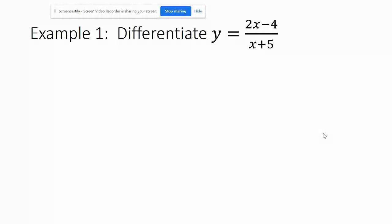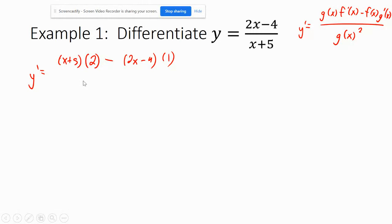All right. Differentiate y equals 2x minus 4 over x plus 5. So we have bottom top prime minus top bottom prime all over bottom squared. So that means y prime equals the bottom, x plus 5 is the bottom function. Top prime is just 2 minus top times bottom prime. Derivative of x plus 5 is just 1. All over x plus 5 squared.